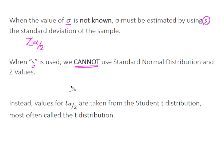Instead of our z value, we're going to use what we refer to as a t value, or in the case of a confidence interval, a t alpha divided by 2. We're going to get those values from the student t distribution, most often just referred to as a t distribution. It's very similar to standard normal distribution but has a couple of key differences.